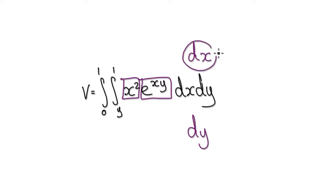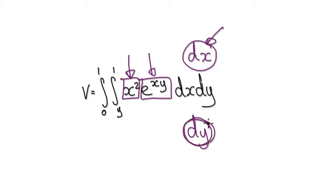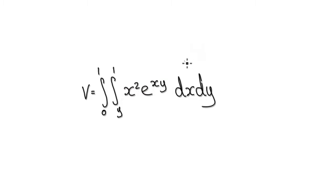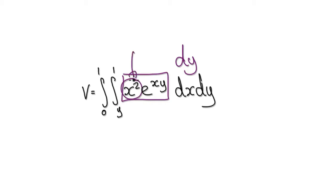If you decided to use dx first, then you've got to treat this as a variable, which in turn means you have to use integration by parts. As it turns out, it's easier to integrate it with respect to y first, and then with respect to x.